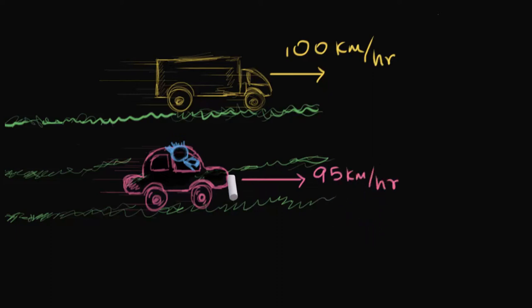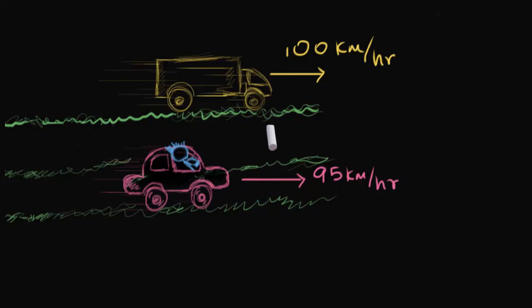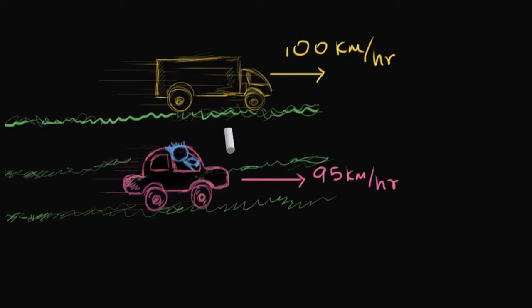Now here's the question. Now that you are inside this car, suppose you again look at the truck — what will you see the velocity of the truck to be? Do you still see it as 100, or do you see it as faster or slower? I want you to pause and think about what you would see.